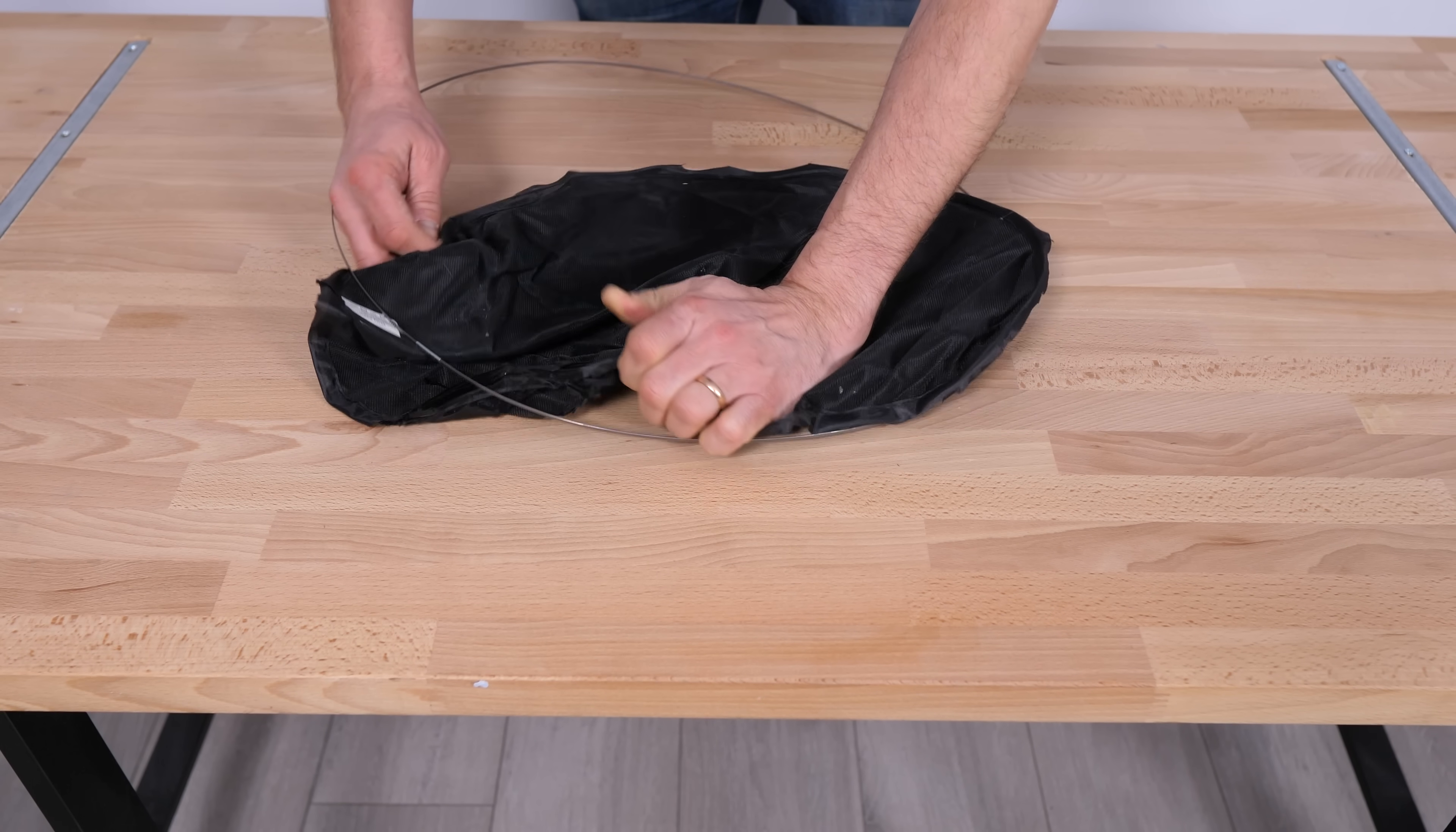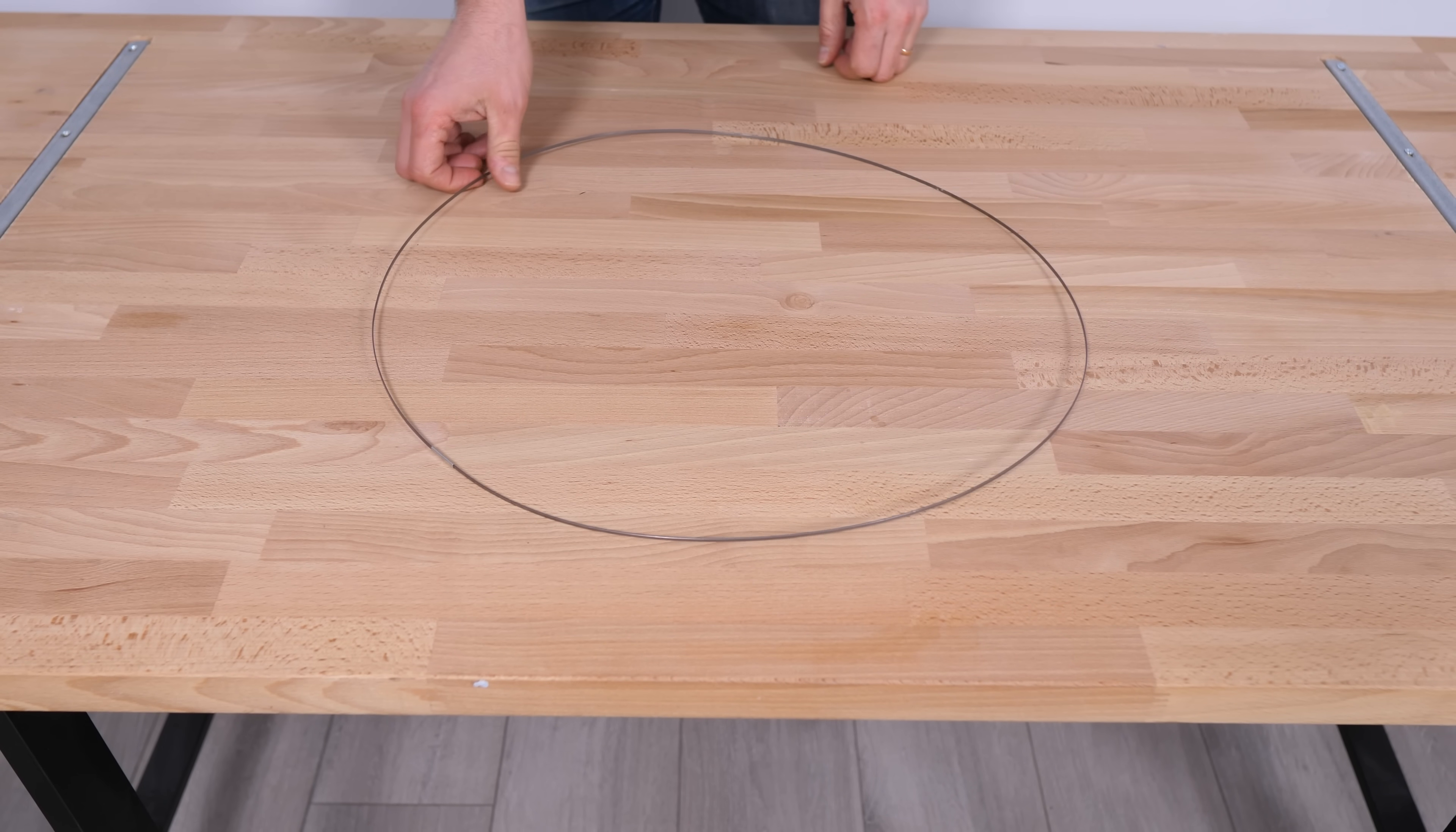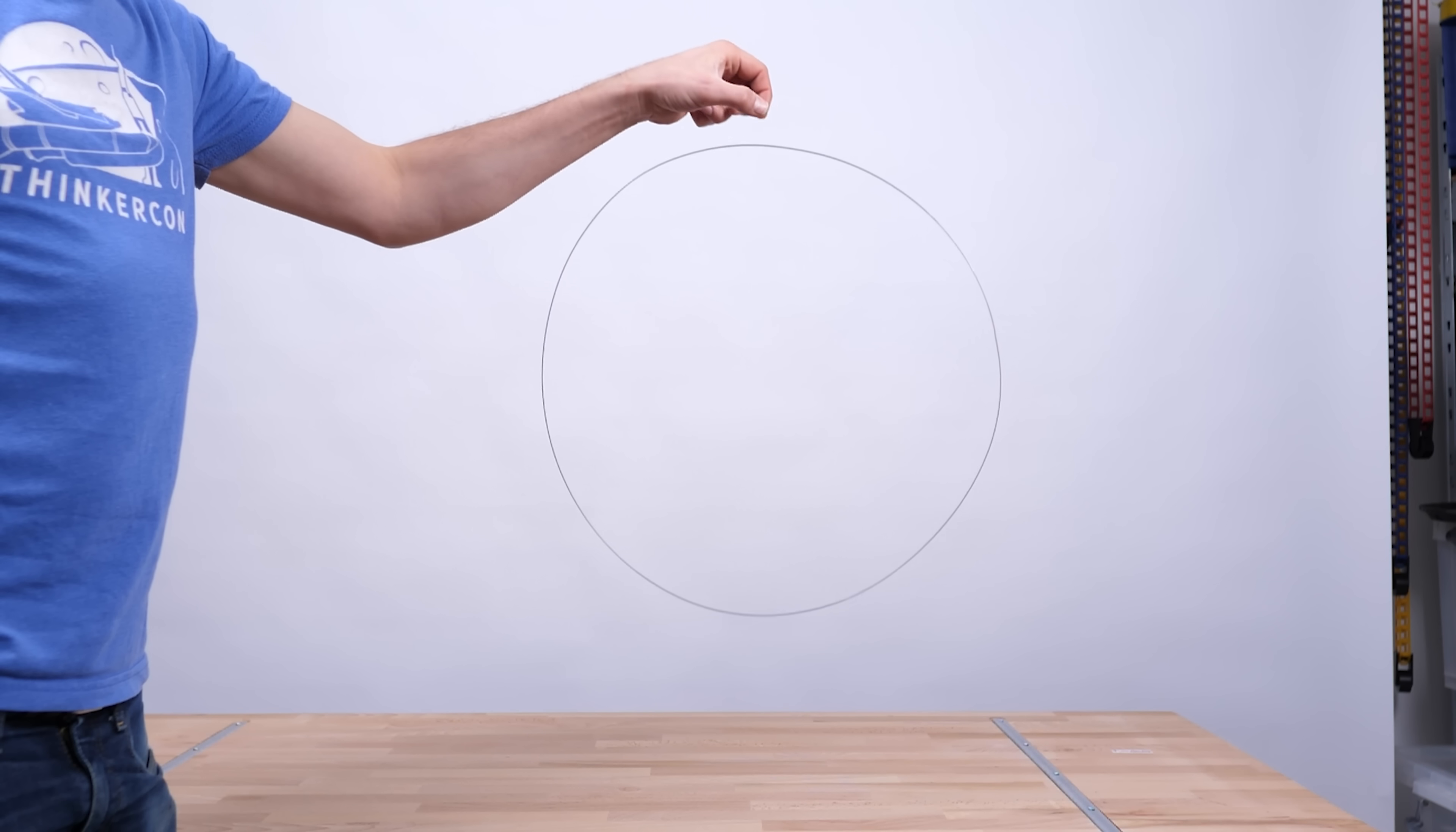When you strip the fabric away, it's a lot easier to see what's going on. It does relax into a circle when you do that, but that's not really a problem for our purposes. Look, a 2D bouncy ball.